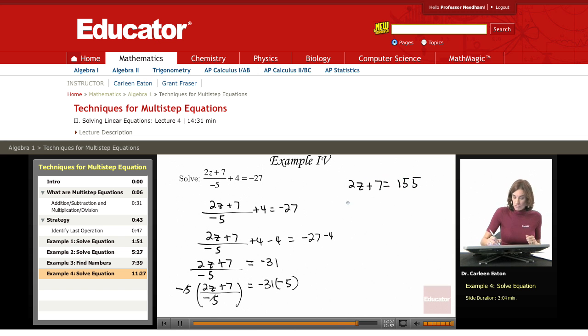Now it's much more straightforward. 2z plus 7. To eliminate the 7, I'm going to subtract 7 from both sides.